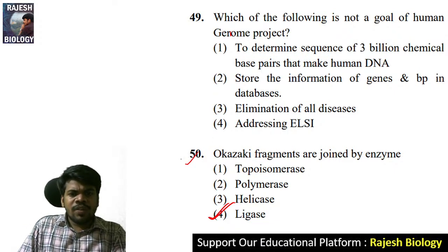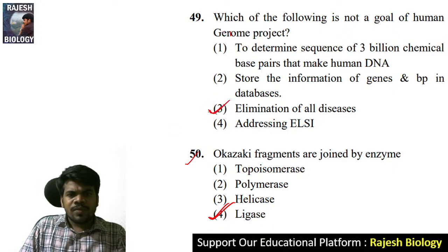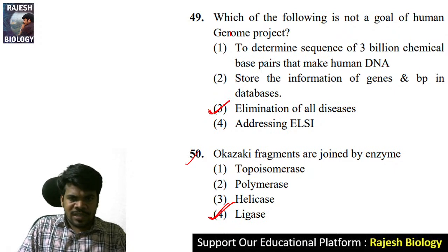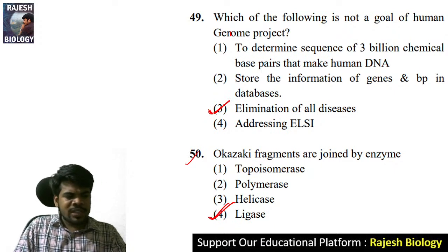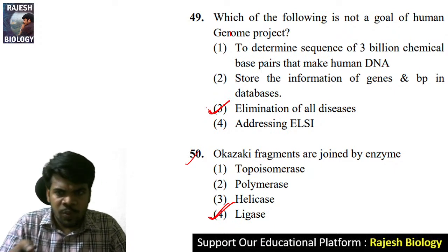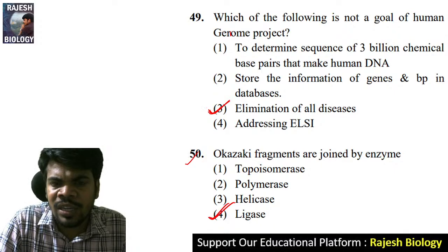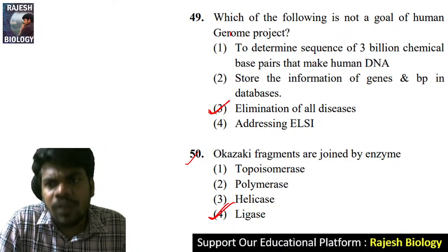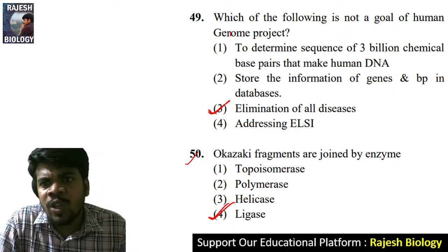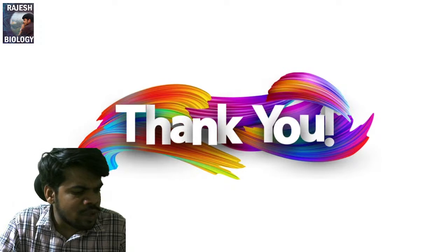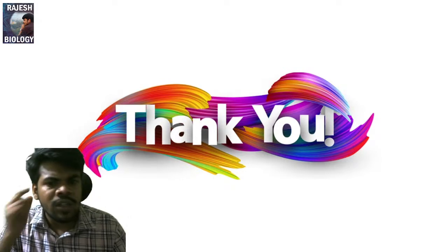For question 49: elimination of diseases is not a goal of the Human Genome Project. They don't aim to eliminate all diseases. The remaining three options are goals of the Human Genome Project. This concludes today's session.